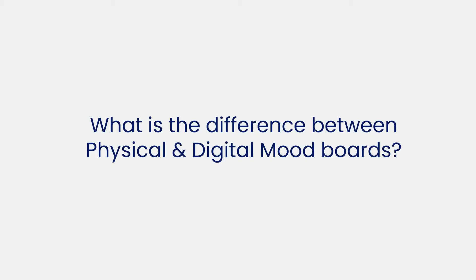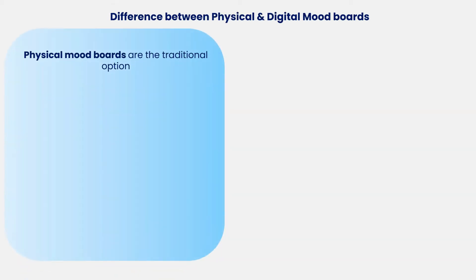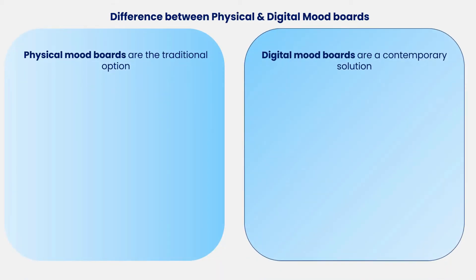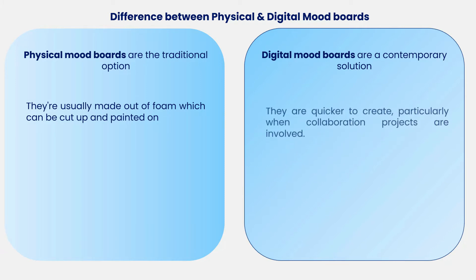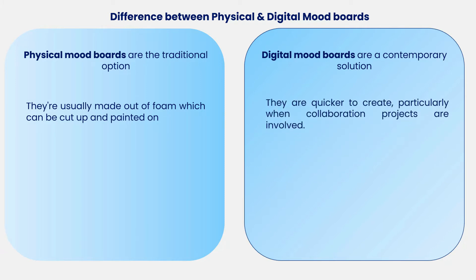Now we'll look into the differences between physical and digital mood boards. Physical mood boards are the traditional option, usually made out of foam which can be cut up and painted on. Digital mood boards are a contemporary solution and are quicker to create, particularly when collaboration projects are involved.